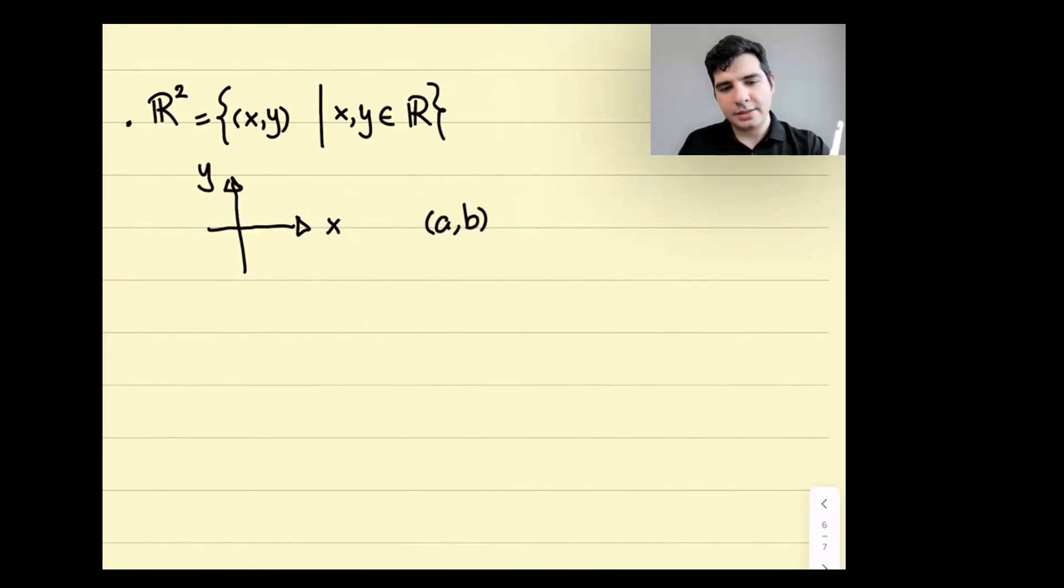Now I want to introduce another group, and that's what is usually denoted with R². R² is the set of pairs of the form (x, y), where x and y are real numbers. So it's like the flat plane, the Euclidean plane. We have the x-axis and we have the y-axis. A point like (a, b) is somewhere here.